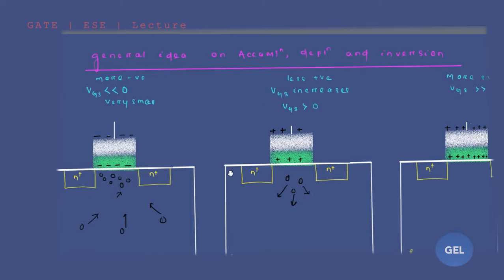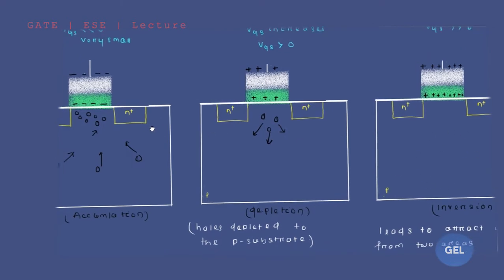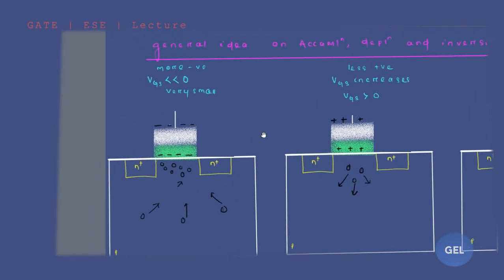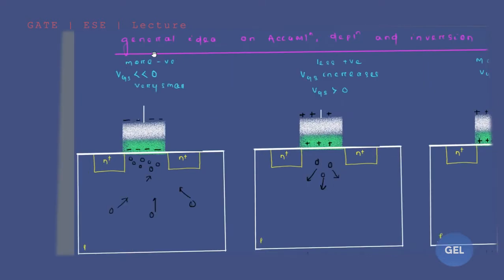This is your accumulation, this is your depletion, this is your inversion. Listen to this statement — it's one of the easiest concepts. Now we will first apply a very small value of VGS which is very, very less than zero, then a little positive which is less positive, and then more positive — which is more positive — when you apply more negative on top of the N-channel MOSFET.